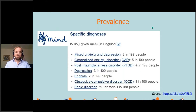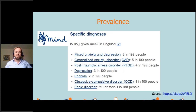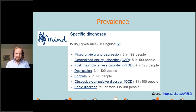As a general prevalence, in any given week in England, there are 18 in 100 people diagnosed with mixed anxiety and depression, six in 100 with generalised anxiety disorder, four in 100 for post traumatic stress disorder, three in 100 depression, two in 100 phobias, one in 100 obsessive compulsive disorder, and one in 100 people with panic disorder. This is all taken from the Mind website, and you can go into more detail and find out more about these individual disorders and issues.